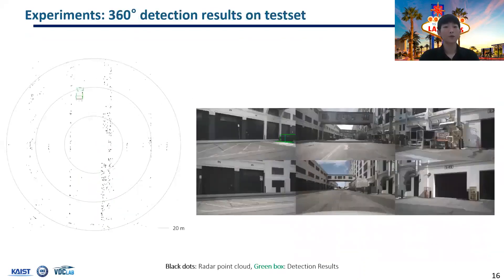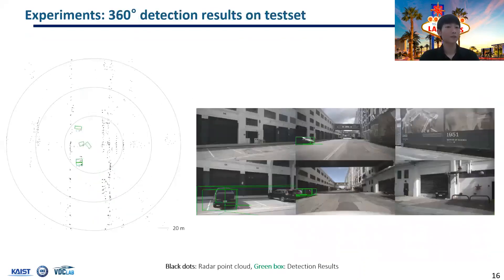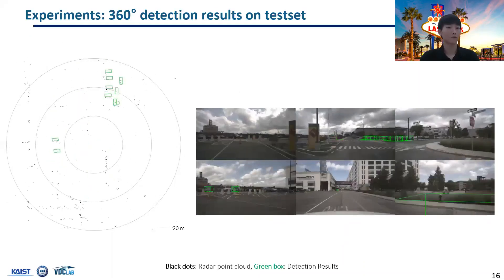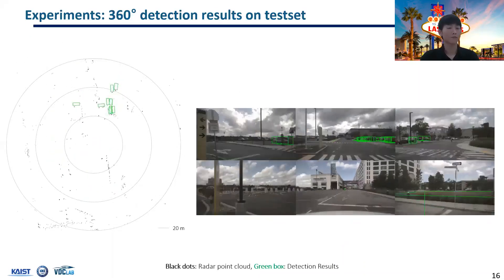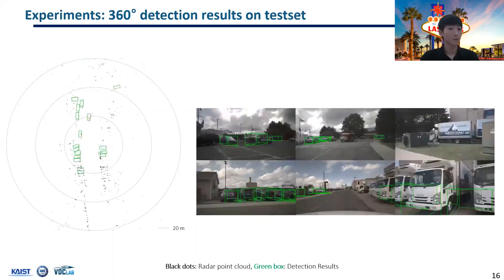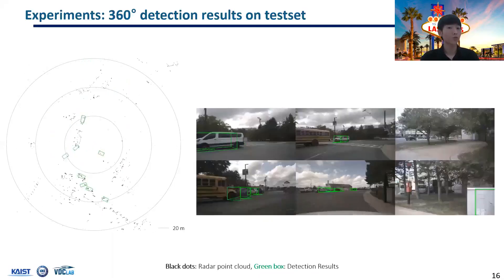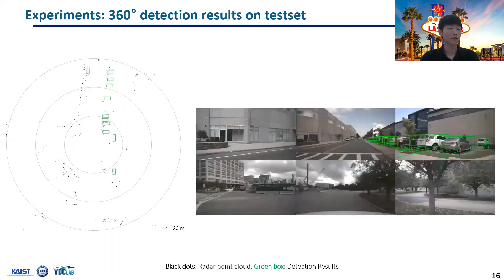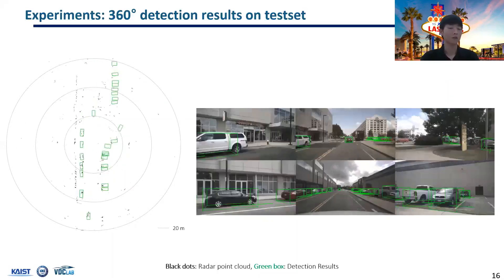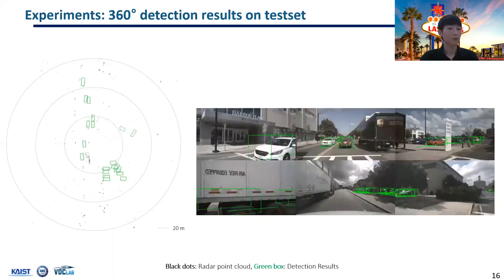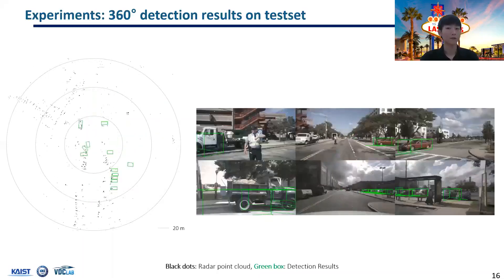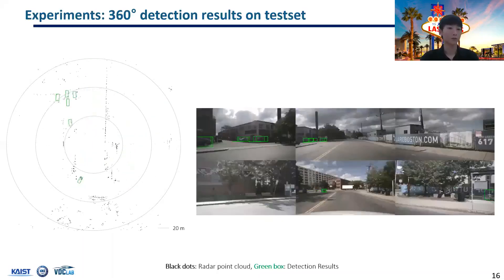This video shows a 360-degree detection result on the nuScenes test set. The proposed fusion network successfully detects objects all around the vehicle, and the network is well generalized to detect distant vehicles up to 60 meters.